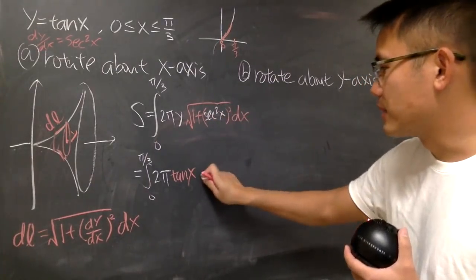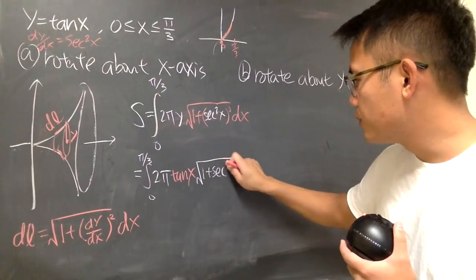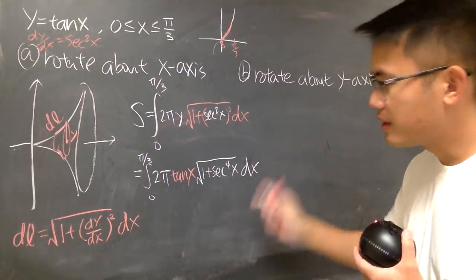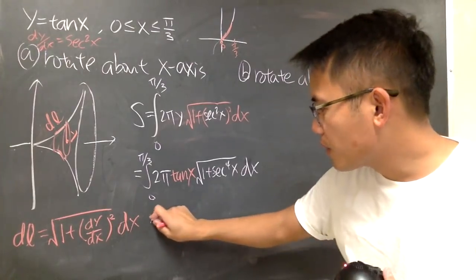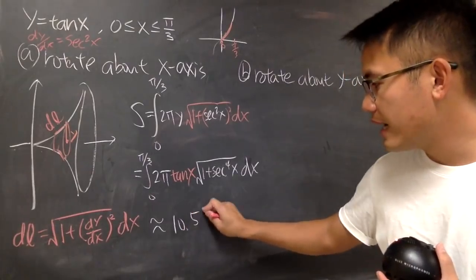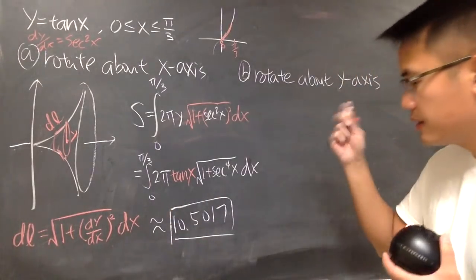And then this guy is still the same, so I'll just open the square root of 1 plus secant to the fourth power, because square square, and then you have the dx right here. That's pretty much it. Use a calculator, you will get about 10.5017 for the answer. That's pretty much it.